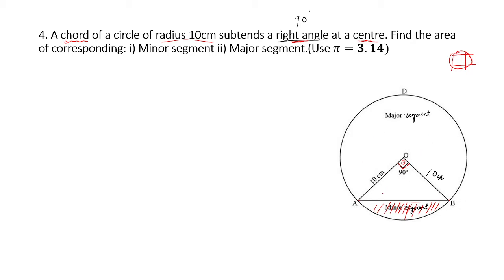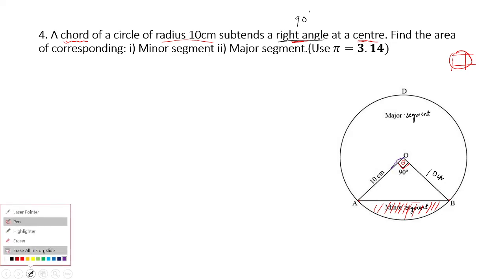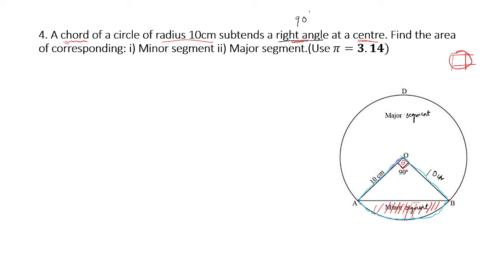To find the area of the minor segment, look at the blue area — that is the minor sector. If we calculate the area of the minor sector and subtract the area of triangle AOB, we'll be left with the area of the minor segment. We don't have a specific direct formula for the minor segment area.